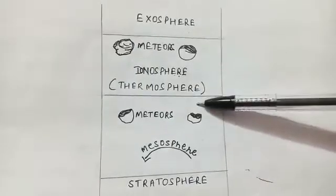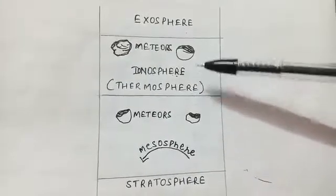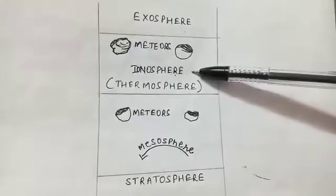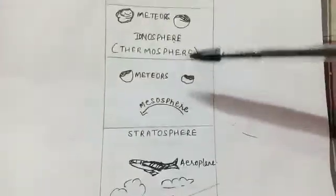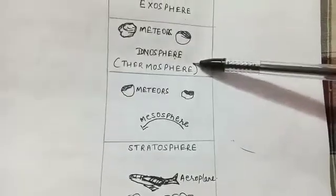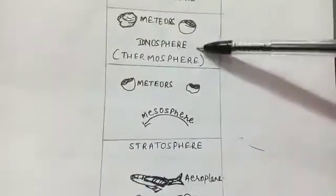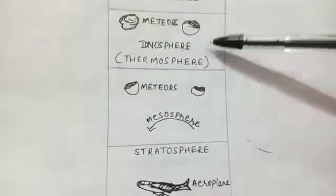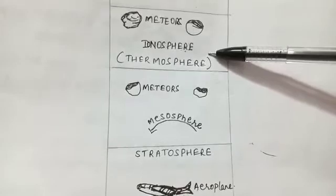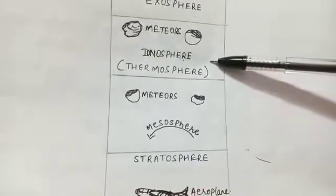This layer also contains electrically charged ions. These ions reflect radio waves back to the surface of the earth and due to this reason wireless communication is possible on earth. Due to the presence of these charged ions this layer is also known as ionosphere.